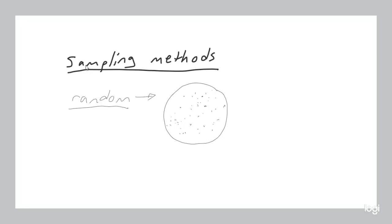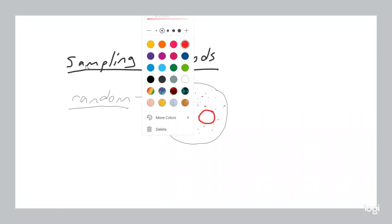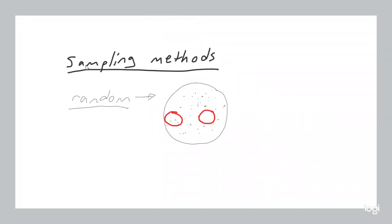The benefit of random sampling is that there's no systematic bias that could come into play, because you are selecting individual units randomly. The drawback is that you might accidentally end up with a bias — for example, you might end up with a lot more individuals from one neighborhood than another, giving you an accidental bias even though no specific bias was built in.